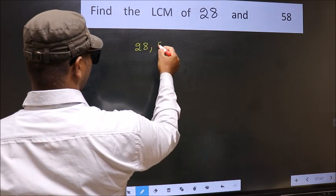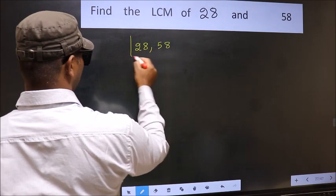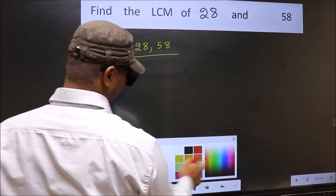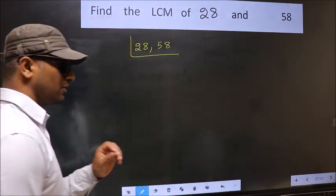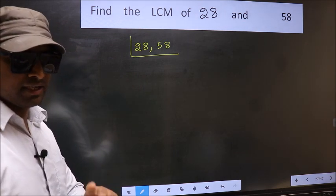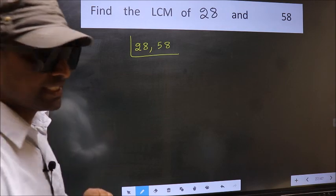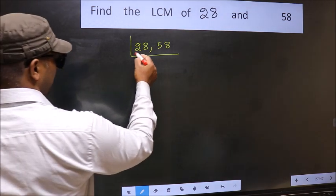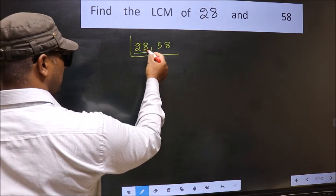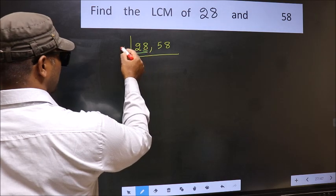28, 58. This is your step 1. Now you should focus on the first number which is 28 here. For this number, last digit 8, even, so take 2.